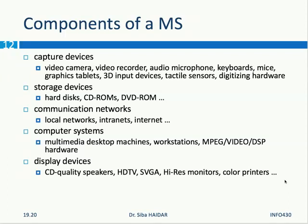The components of a multimedia system include capture devices, which capture the media — whether visual, audio, or text. There are also devices to store the captured media and to communicate through the network. The system must have output through display devices such as CD-quality speakers, HD TV screens, SVGA high-resolution monitors, and color printers. Every device that transmits media from the system to the user is a display device; every device that transmits media from outside to the system is a capture device.